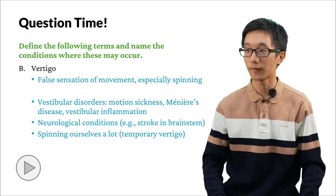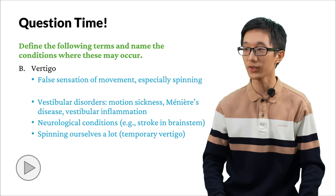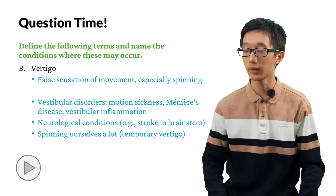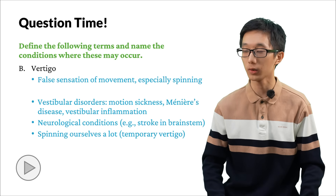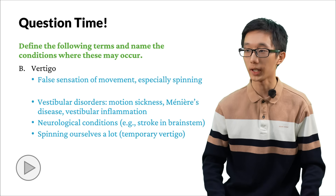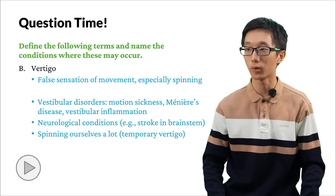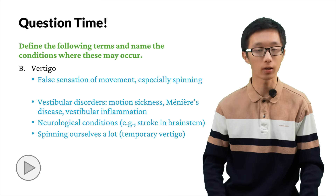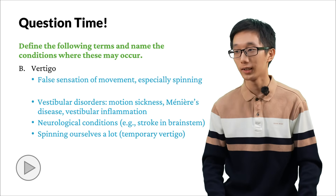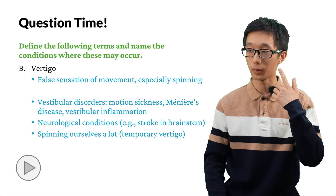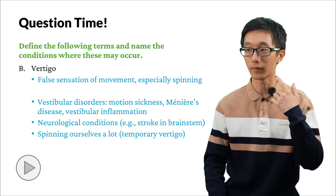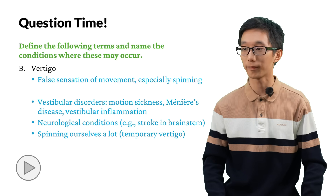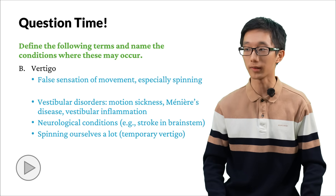Vertigo is the false sensation of movement, especially spinning. It occurs in vestibular disorders such as motion sickness, Meniere's disease, and vestibular inflammation. It may also be caused by neurological conditions such as strokes in the brainstem. One common form of vertigo happens when we spin ourselves a lot — the inertia of the endolymph in the vestibular organs causes a temporary vertigo. This is not very pathological and recovers in due time.